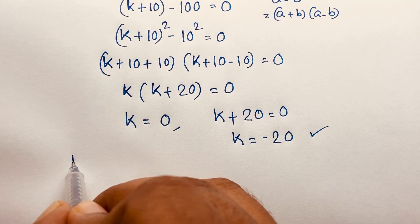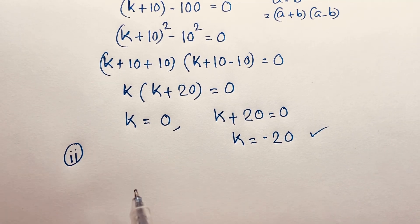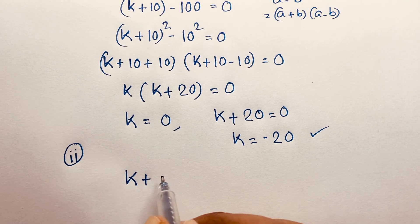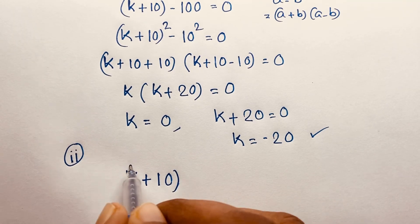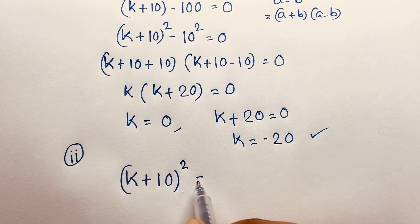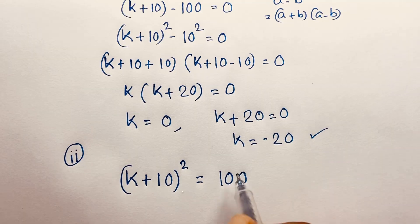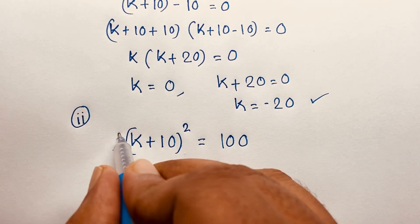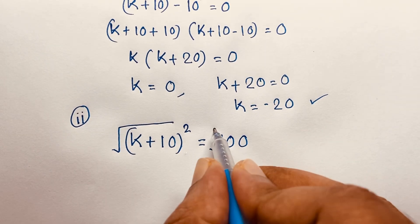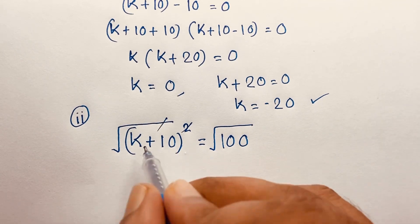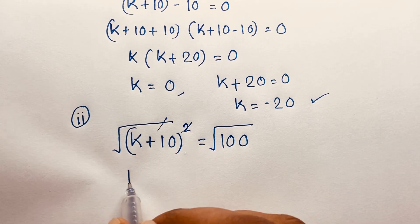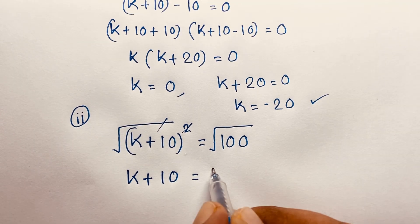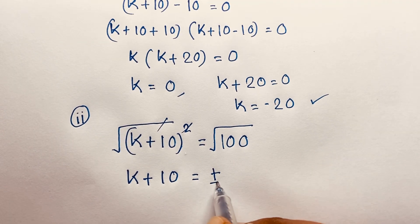Now I solve this question using the second method. Our question is (k + 10)² = 100. I apply a square root to both sides. The square root cancels, and we find k + 10 = ±10.